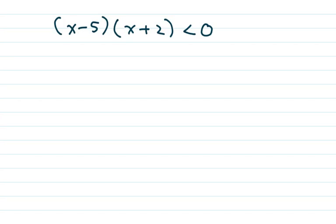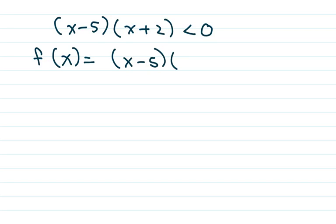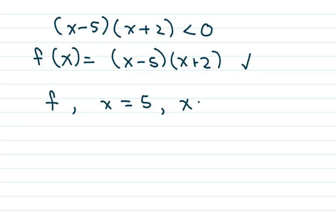The first one we're going to do is x minus five times x plus two is less than zero. The first thing we're going to do is write our function: f of x equals x minus five times x plus two. We're going to use this on our chart. Our zeros of f are x equals five and x equals negative two — that's where y is zero, so that's where f of x is zero.